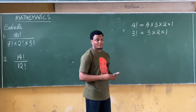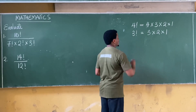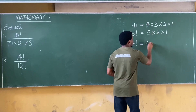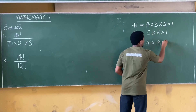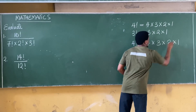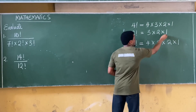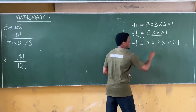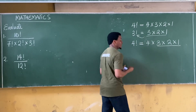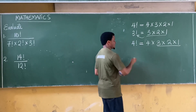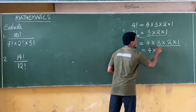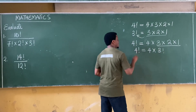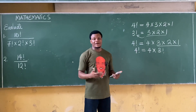Now if you observe clearly, we can see that four factorial is equal to four times three times two times one. But we already said three times two times one is the same thing as three factorial. So all of this is simply three factorial, which means four factorial is equal to four times three factorial.